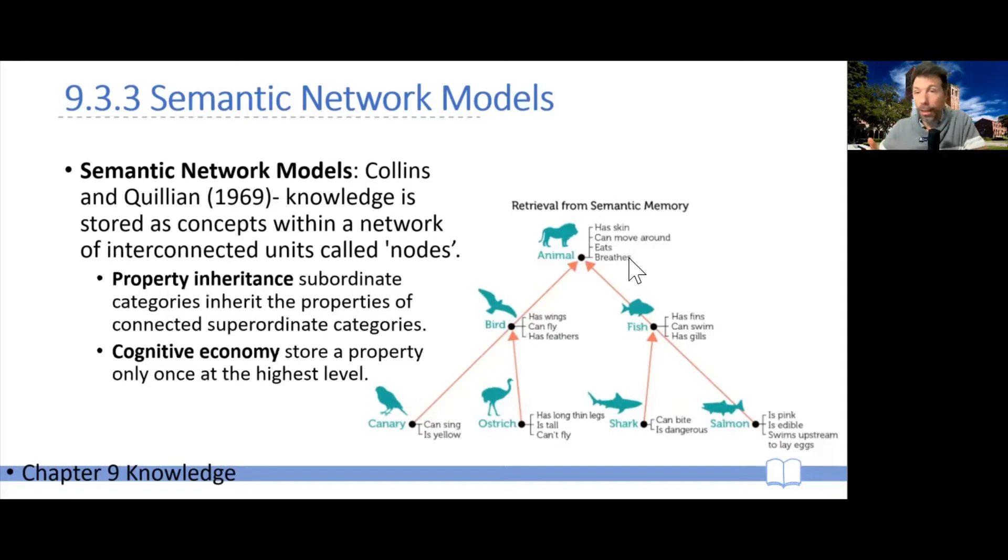And this leads to the idea of cognitive efficiency. We store concepts only once inside this network, and we store them at the top level. So because anything in animal will have skin, we just put that property at the top, and then it's understood that anything below that also has this property.